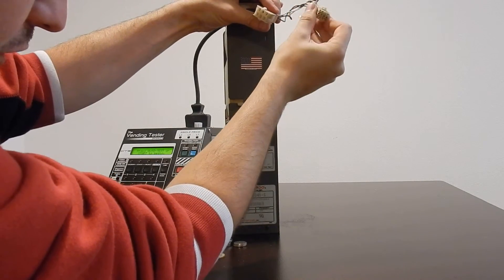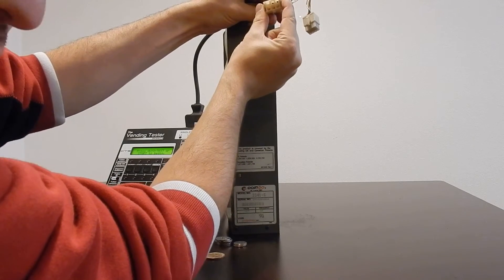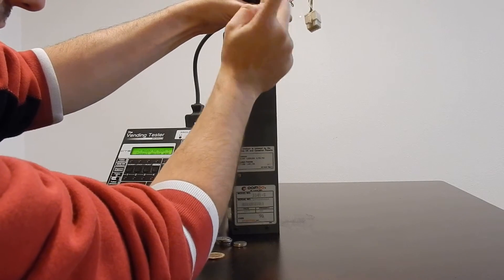This little square one, the smaller one on the right with more pins, is for Mars. This bigger rectangular one on the left is for CoinCo.